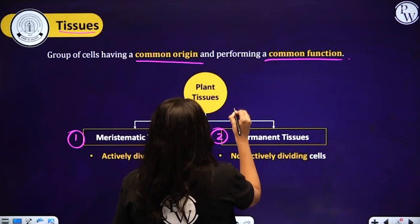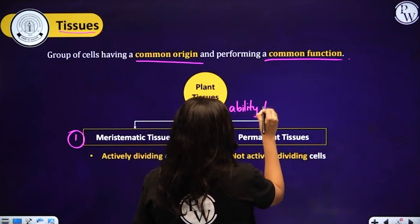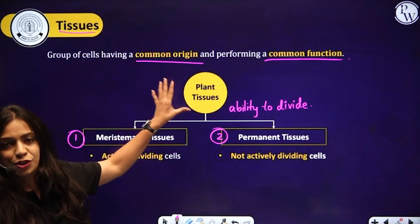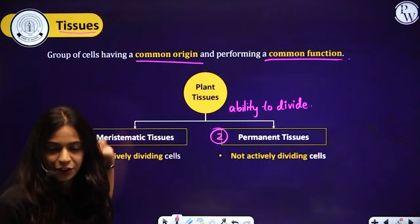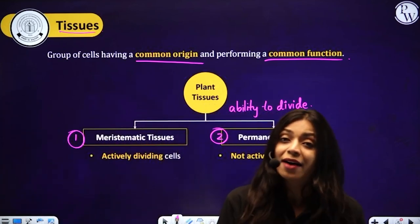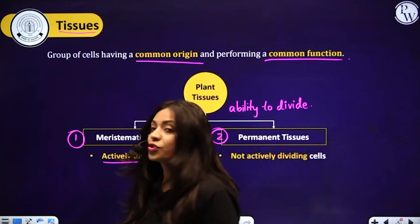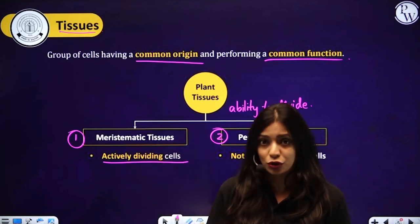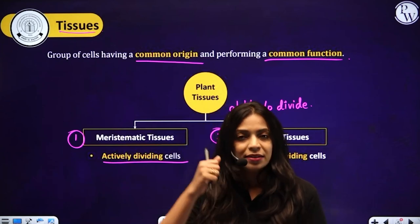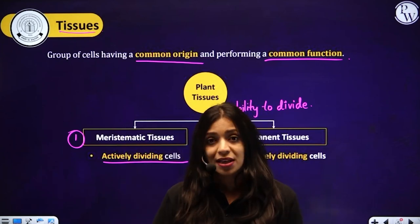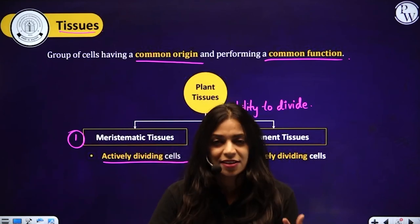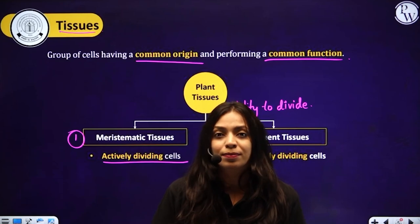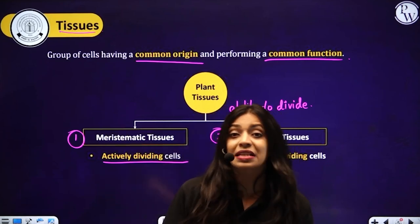Meristematic tissues have cells that have the ability to undergo cell division — they are actively dividing. These are the cells that cause the growth of plants. They keep on dividing and increasing in number: one cell becomes two, two become four, four become eight. So meristematic cells are responsible for the growth of the plant — they keep dividing and increasing the number of cells in the plant body.